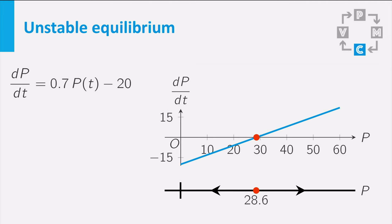Actually, we start with 30 rainbow fish, so above the equilibrium solution. The derivative of P is positive, so P will grow, and then the derivative becomes even larger, and the population will grow faster and faster. The result is that the population grows exponentially.